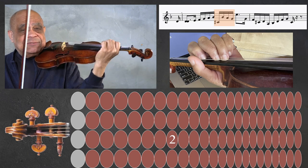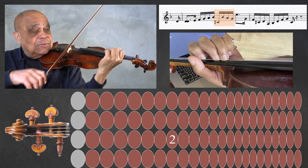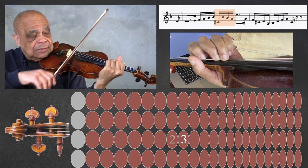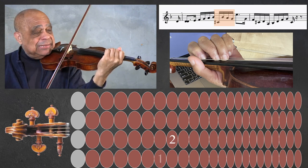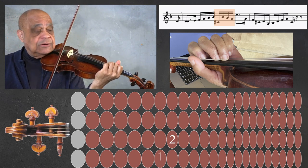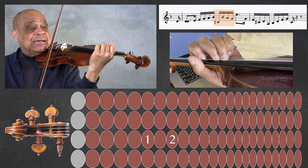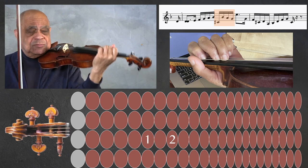While playing the second finger A, now place the first finger a whole step back from that second finger for the G natural.